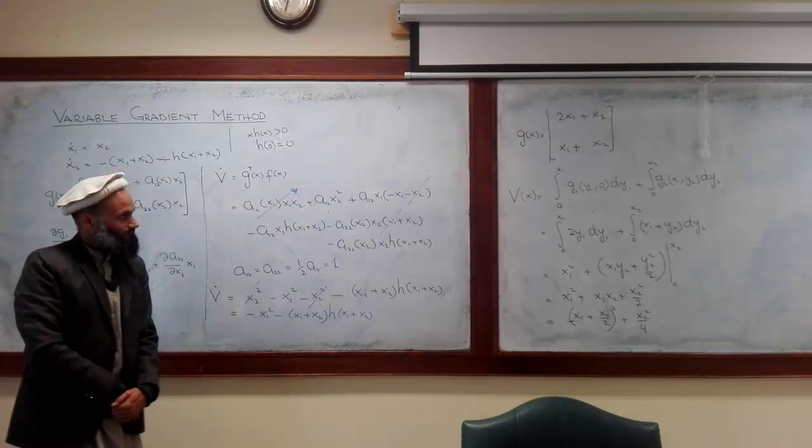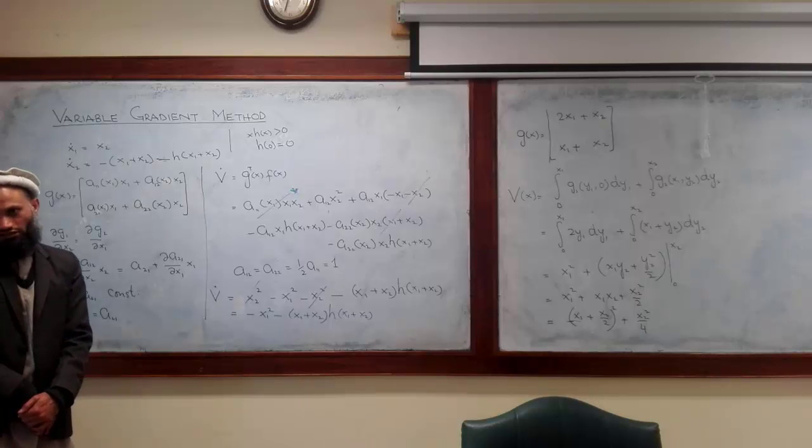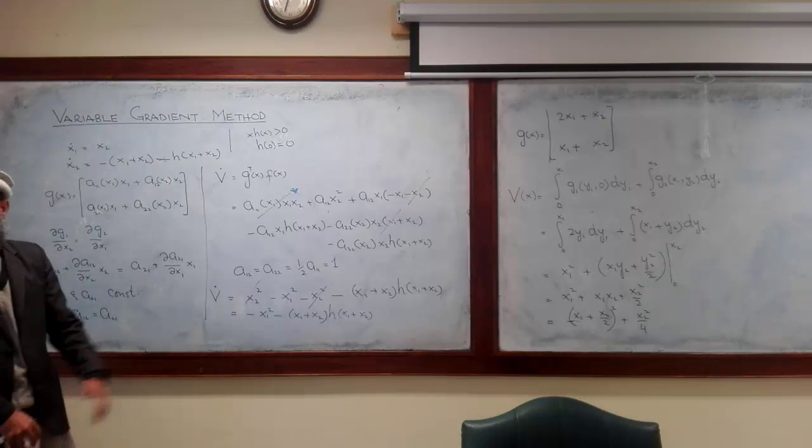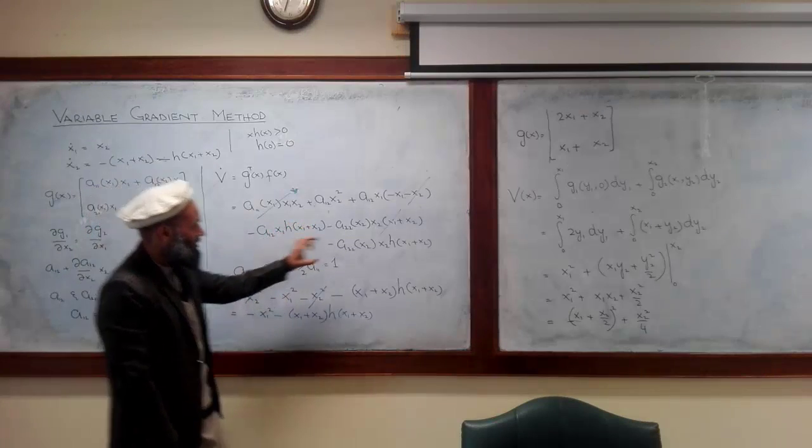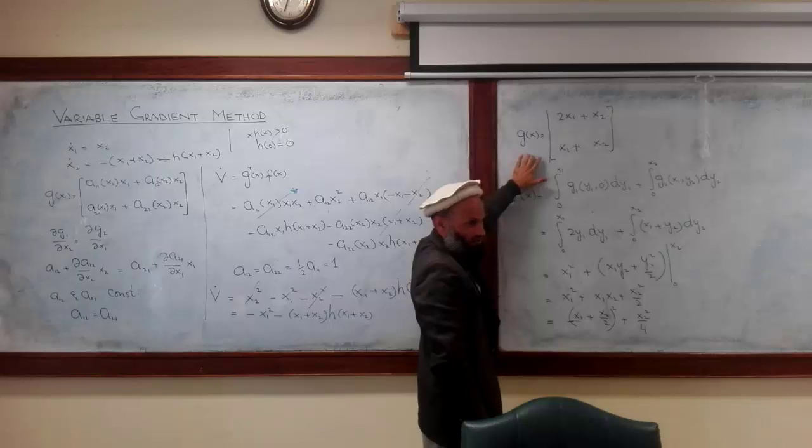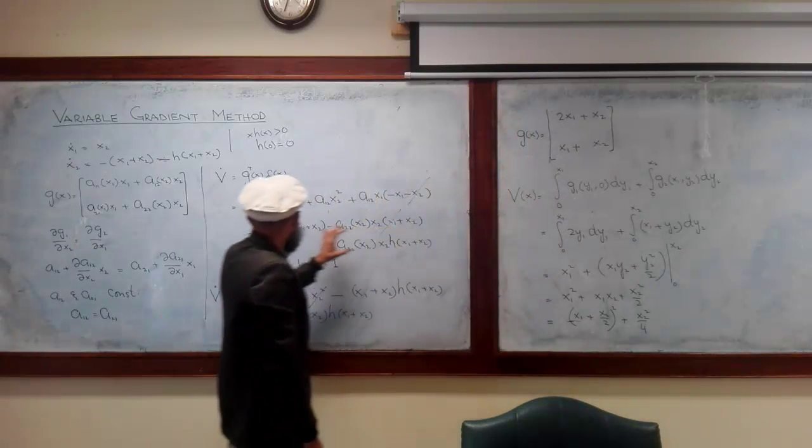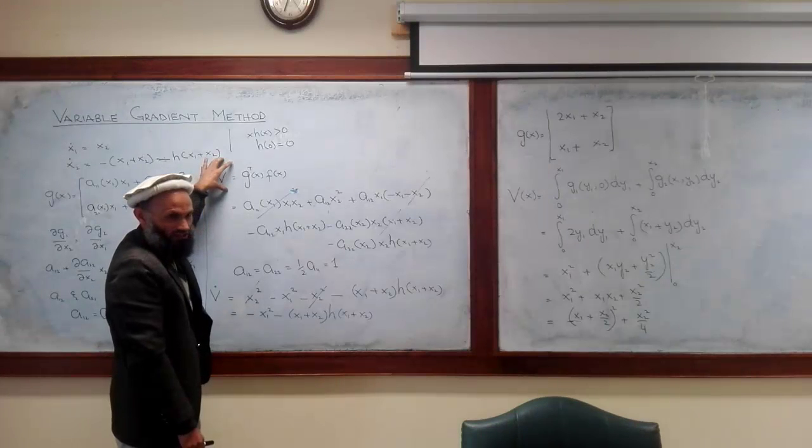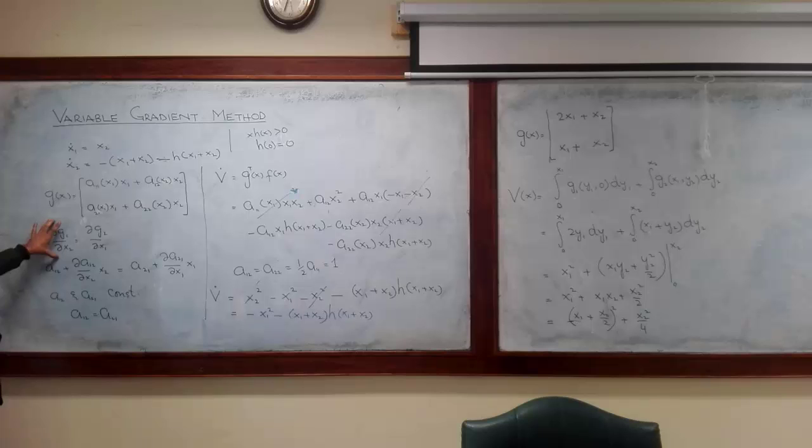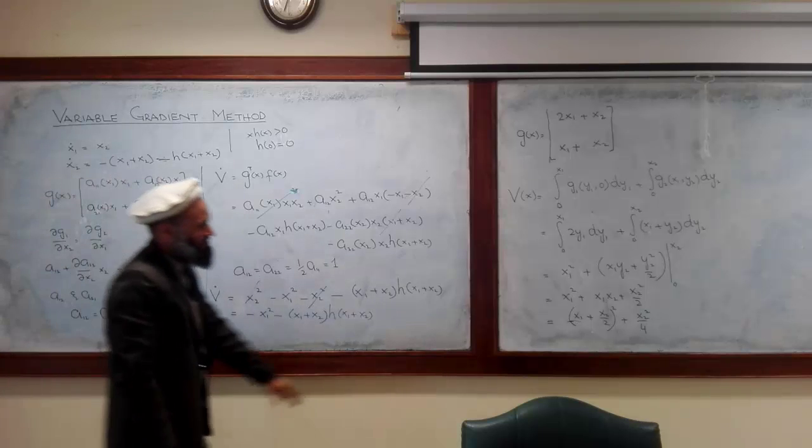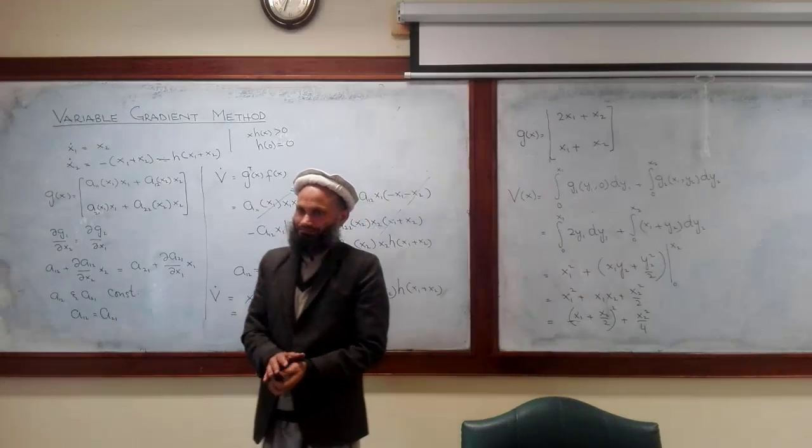This is the approach and you will see that for each different problem you have to apply different strategy for the selection of g of x. G of x should be selected such that this V dot comes out to be negative definite and g of x satisfies this condition and the resultant V of x is positive definite.